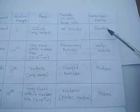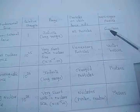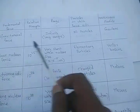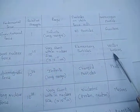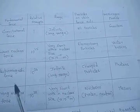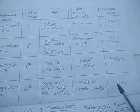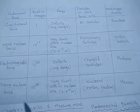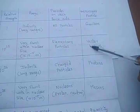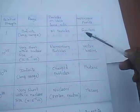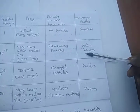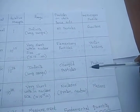Let us summarize the messenger particles: gravitons are the messenger particles for gravitational force, vector bosons for weak nuclear force, photons for electromagnetic force, and mesons for strong nuclear force. These are all very important points in this unit — what are the messenger particles for all four fundamental forces?